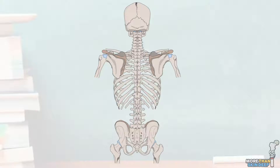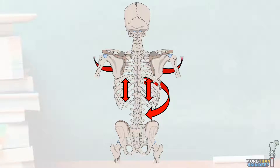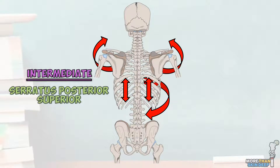The muscles of the back are often forgotten during anatomy studies but are just as important as all those potentially more interesting muscles on the front of your body. They're involved in the movements of the spinal column, ribcage, and shoulder joint, and work in antagonistic pairs with your anterior muscles to ensure you don't just fold in the middle. We've already covered the deep back muscles, so today we're going to look at the intermediate and superficial muscles of the back.